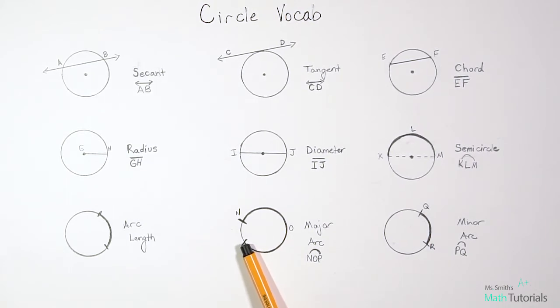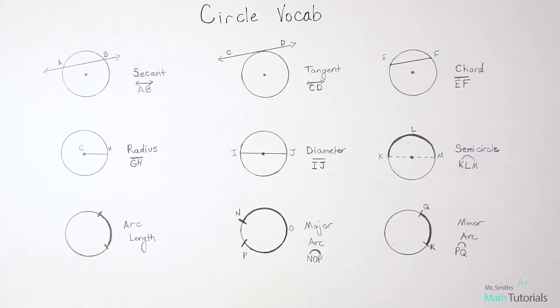Is that this arc right here N-P or is that this arc right here N-P? So it creates confusion. So we eliminate that confusion by if it's a major arc, we use three letters N-O-P.